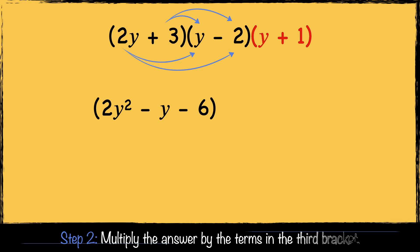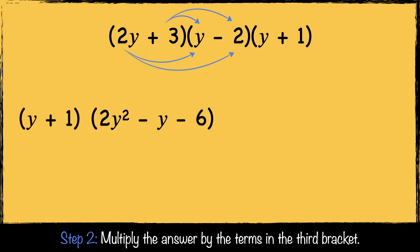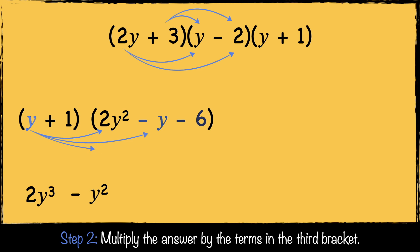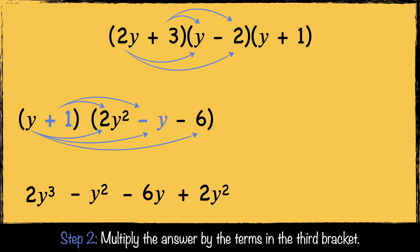Now we're on to step two, where we multiply the answer by the terms in the third bracket. It's easier to place the shortest bracket at the start. So y multiplied by 2y squared is 2y cubed. Then y multiplied by minus y is minus y squared, and y multiplied by minus 6 is minus 6y. Then we multiply 1 by minus 2y squared, which is minus 2y squared. Then 1 multiplied by minus y gives us minus y, and 1 multiplied by minus 6 is minus 6.